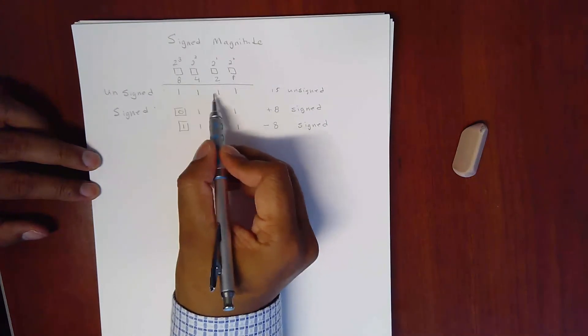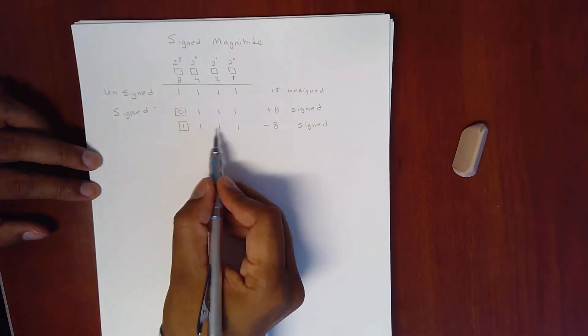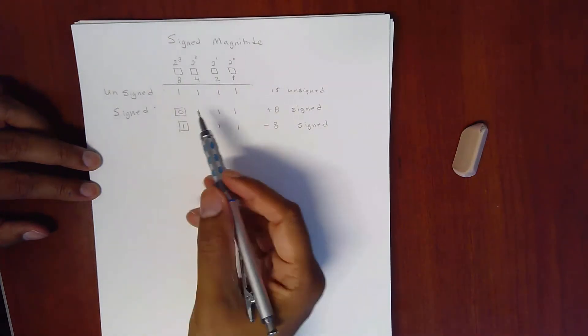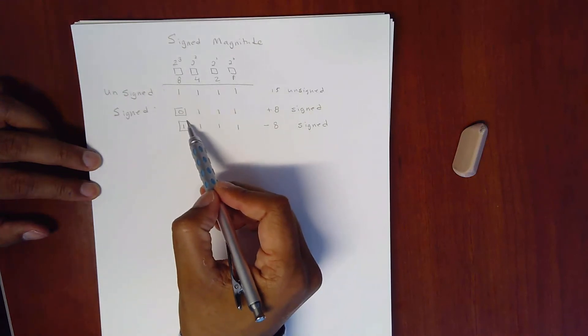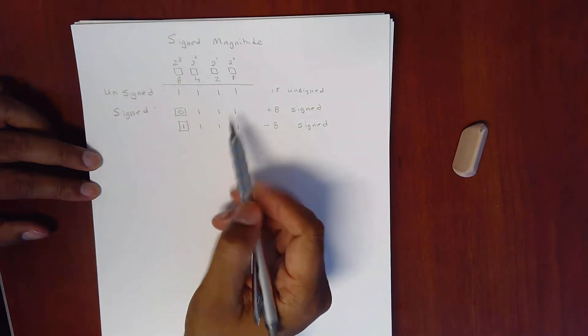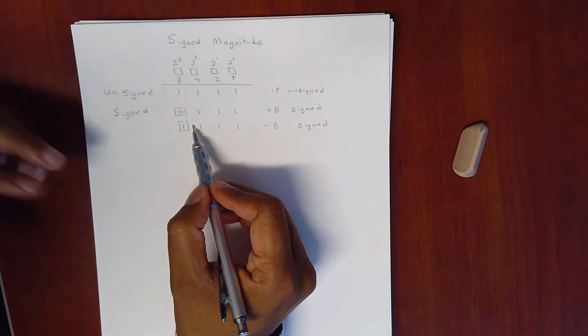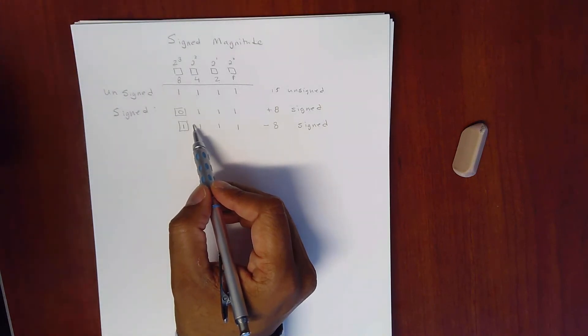Notice they both have 1, 1, 1, 1. However, the difference in signed is this no longer counts in the numeric computation, but it's simply a positive or negative placeholder.